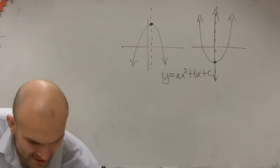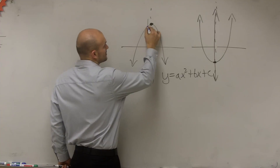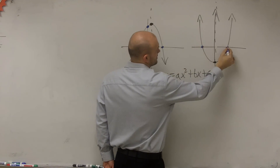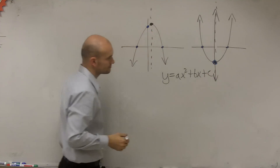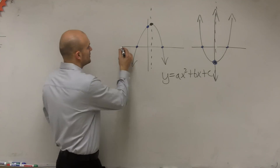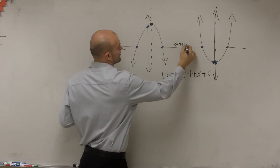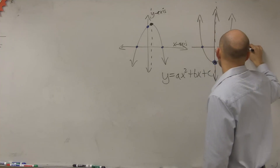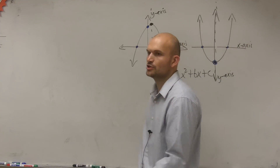So today, what I want to focus in on is finding some certain points. The certain important points we're going to be looking at are the ones touching the x and the y-axis — the intersections. Because if I was going to label this correctly, we know that this is our x-axis and this is our y-axis.